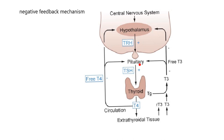The downstream target is the pituitary. When the pituitary sees TRH, it releases thyroid-stimulating hormone, TSH. Another plus sign, meaning TSH is going to find its target tissue and stimulate something. TSH goes in the blood, finds the thyroid, and the thyroid releases T4, thyroxin.